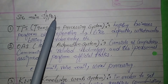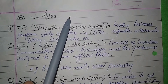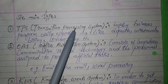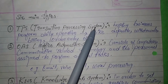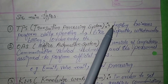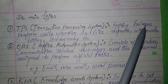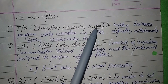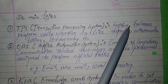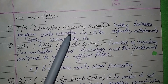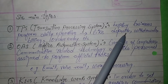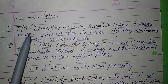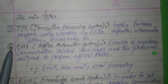Now let us look at the types of computer based information systems. There are six main types. The first is TPS, that is Transaction Processing System, which helps businesses perform daily operations like deposits, withdrawals, billing, and order entry.